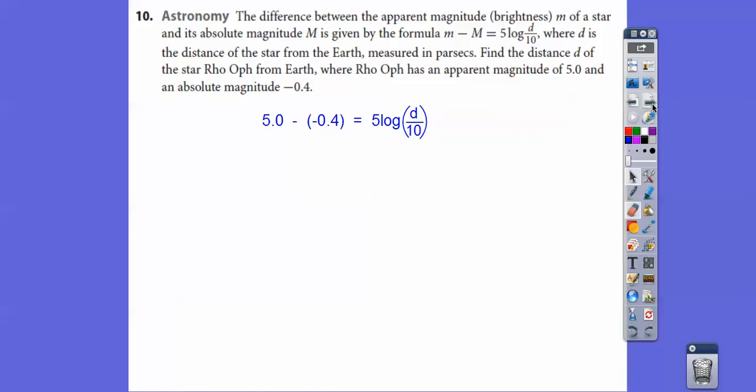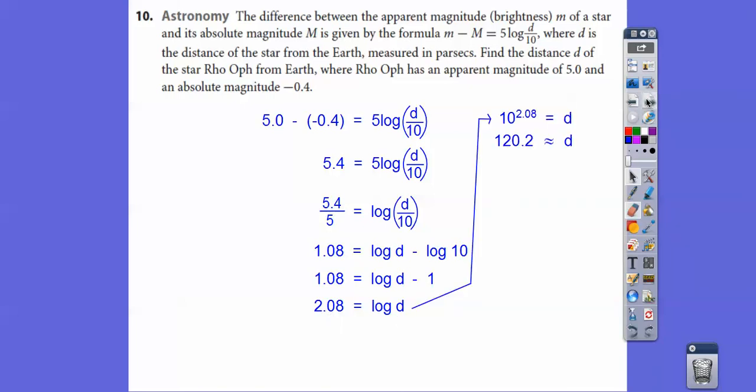5 minus a negative 0.4 becomes 5 plus 0.4, which is 5.4. Now we're going to divide both sides by this 5, so 5.4 divided by 5 gets us 1.08. Over here I separated these with a minus sign. This is base 10, so if these numbers match up, it equals this exponent. If there's no exponent there, it's understood to be a 1, so that equals 1. Add 1 to both sides, and now we're going to go this base, which is 10, to this power equals D. So 10 to the 2.08 equals D, and we get about 120.2. That means it's going to be about 120.2 parsecs from our planet Earth. Alright, take care.